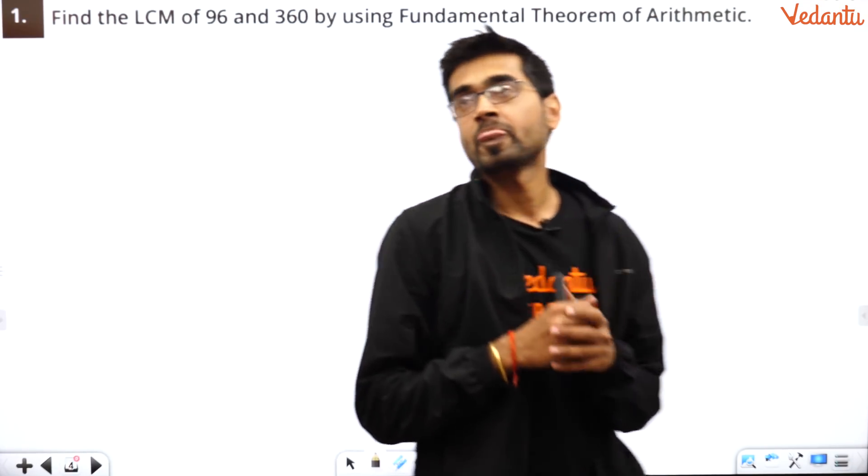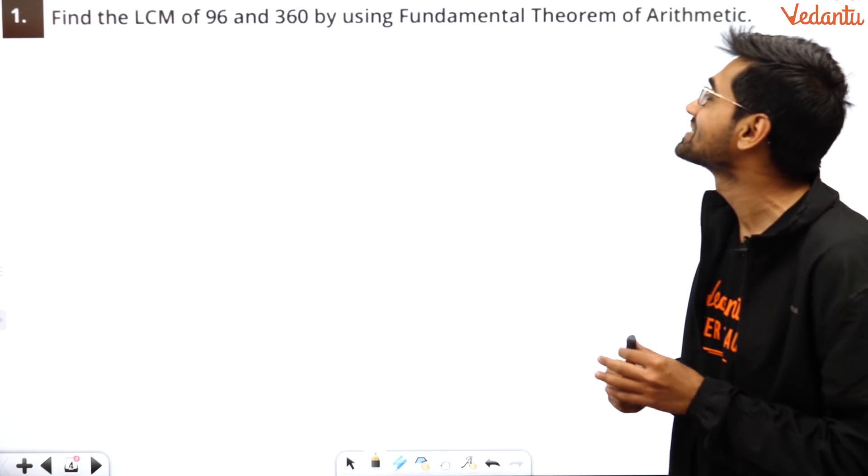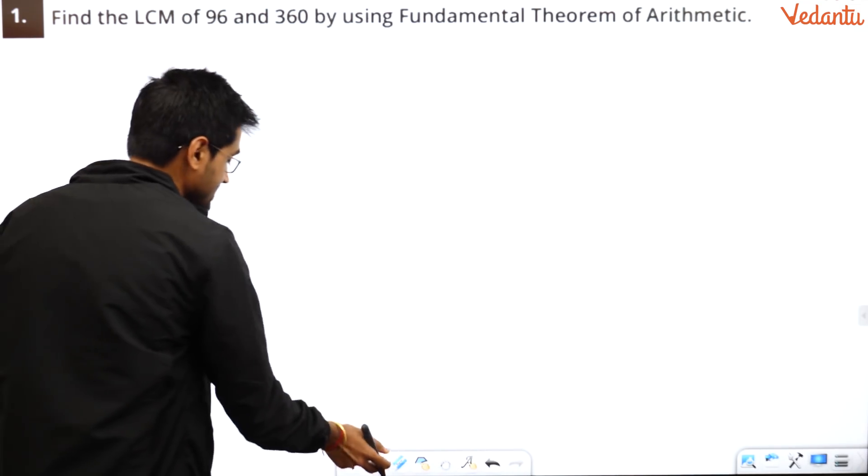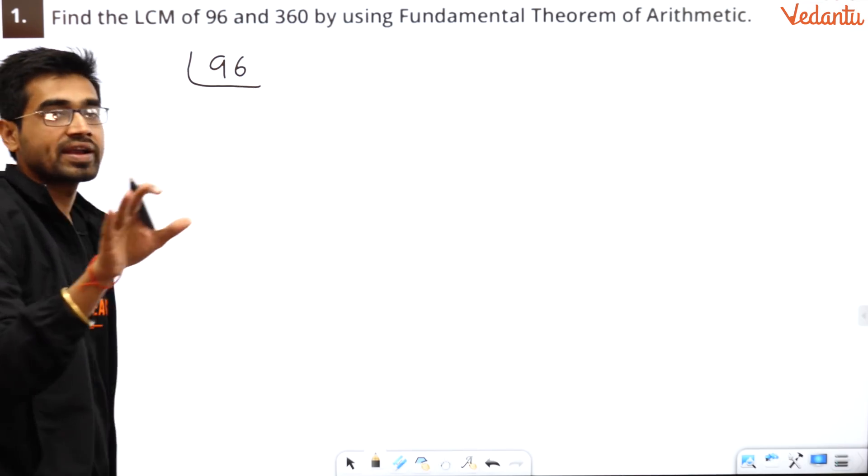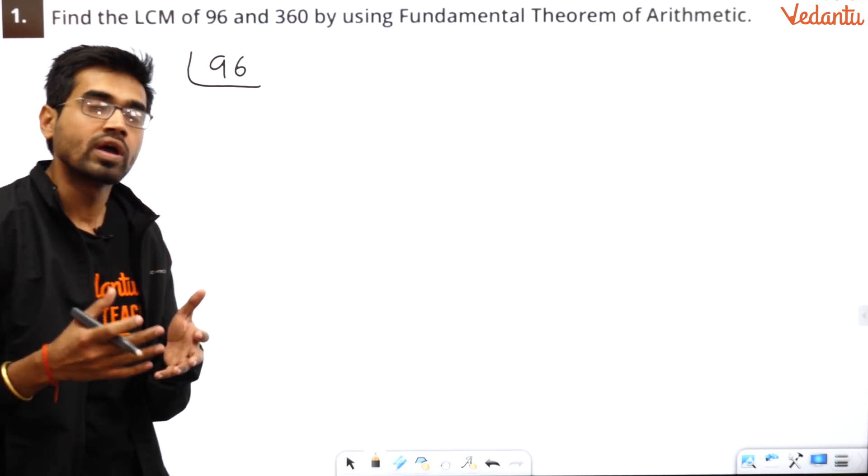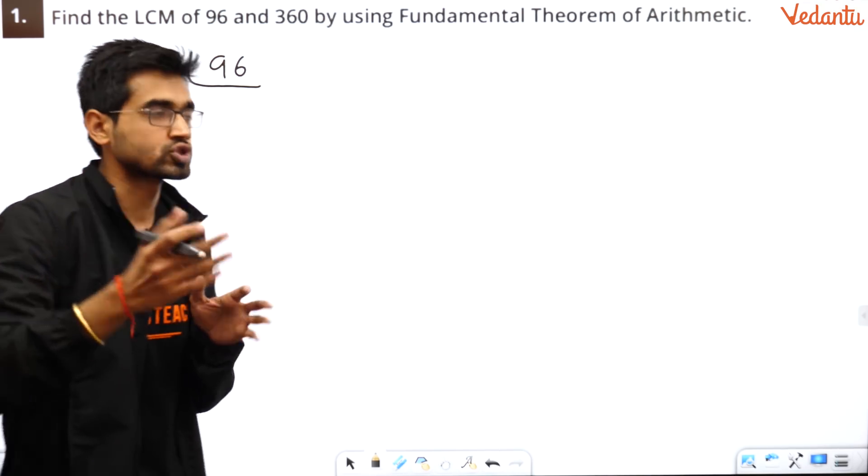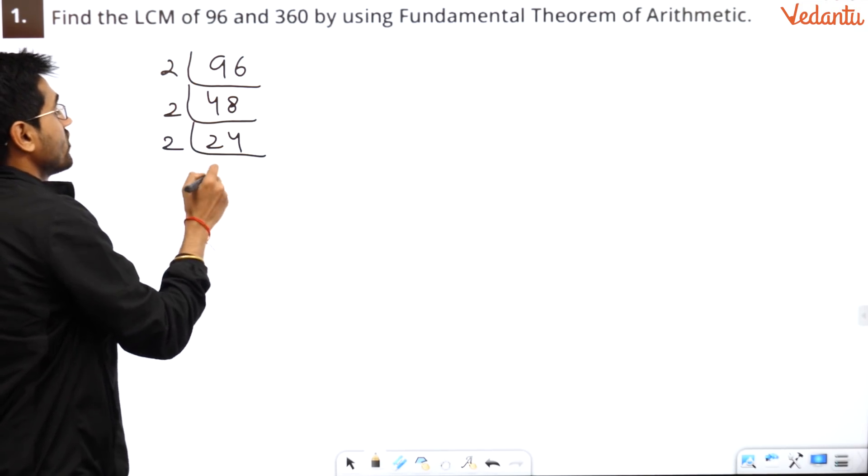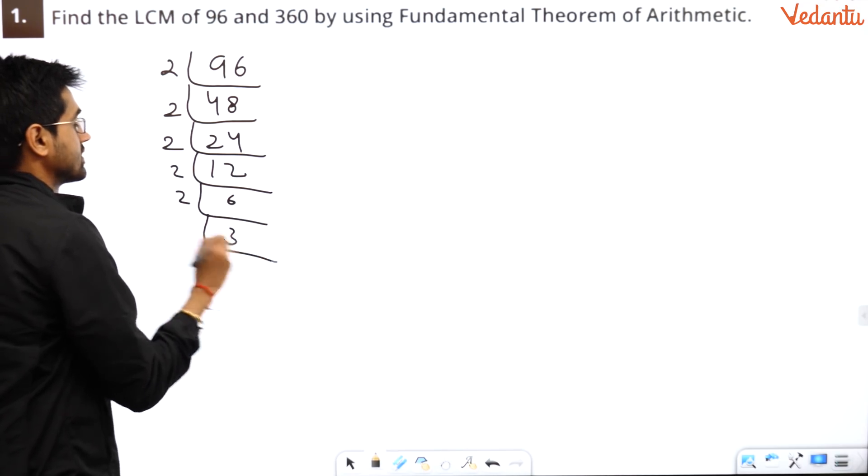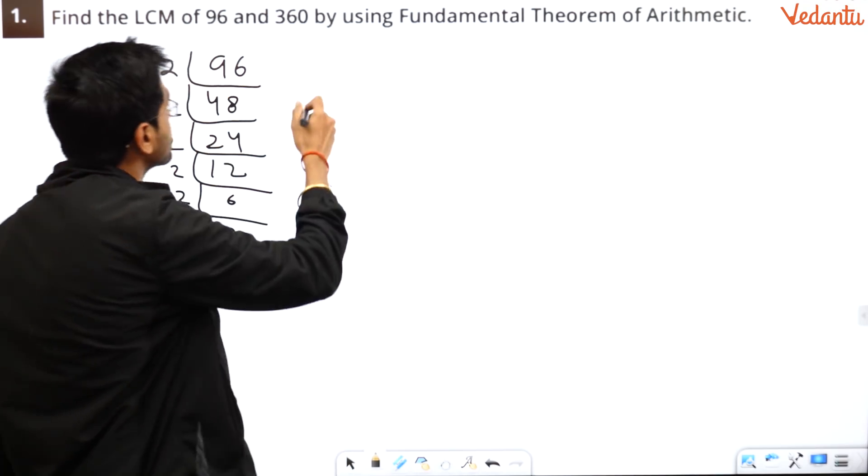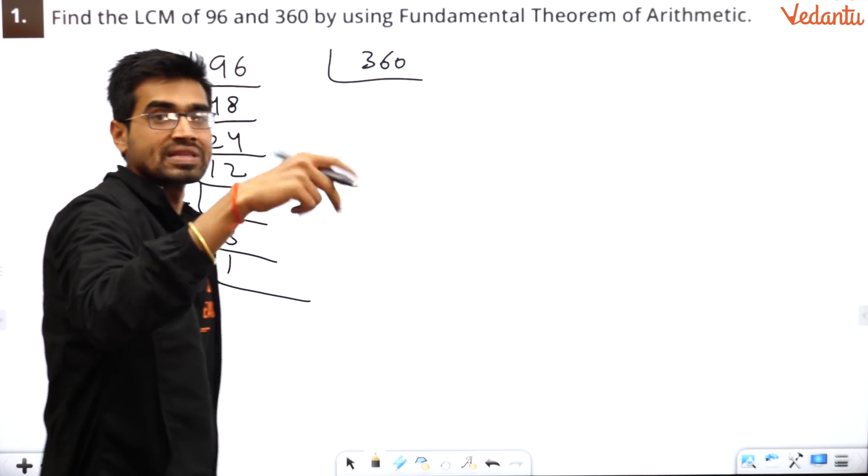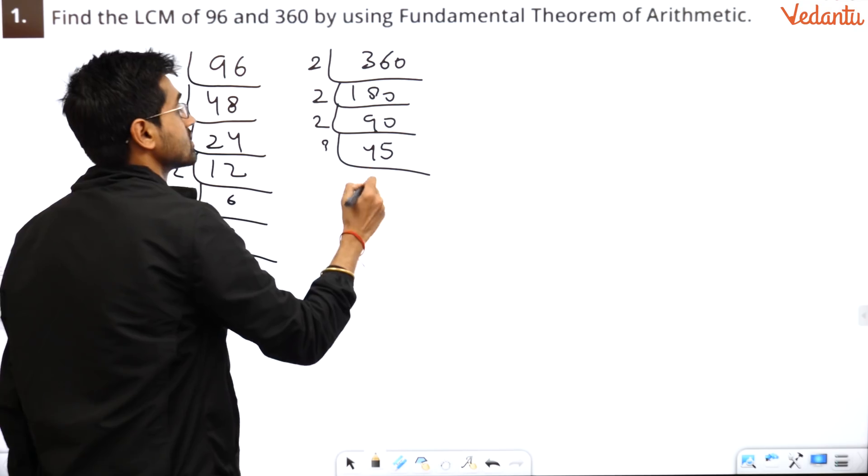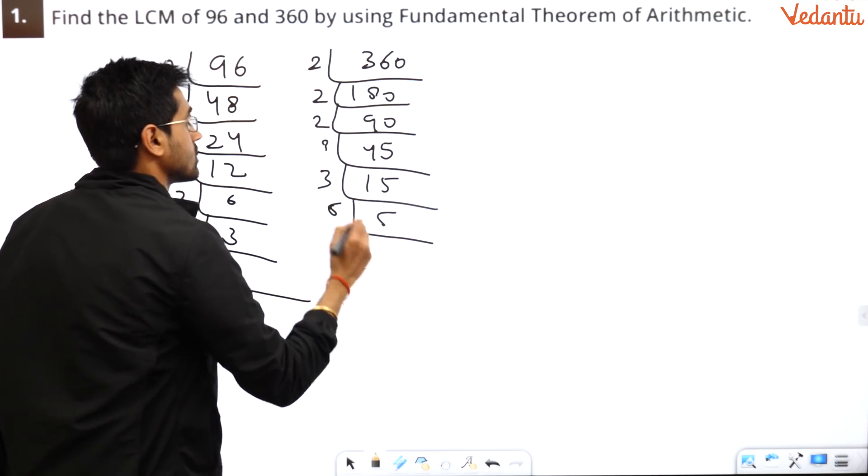Question number one. What does this say? This says that find the LCM of 96 and 360 by using fundamental theorem of arithmetic. That is called an FTA. So it just implies prime factorization and nothing else. So take this number 96 and just divide it by two. Continuously till you cannot divide it by two. If you cannot then go for three, then go for five, then go for seven. So I am not saying anything. Just see this thing because you are much aware. You are smarter people. I know. And you won't find this difficult at all. Yes, we got this part.